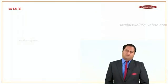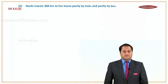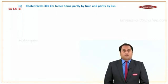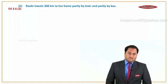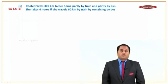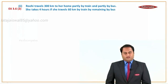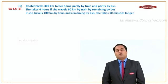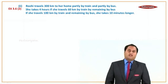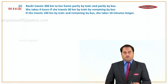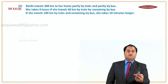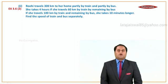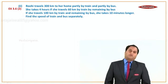Interesting sum on speed, distance and time. Exercise 3.6, sum number 2, sub question 2. Ruhi travels 300 kilometers to her home partly by train and partly by bus. She takes 4 hours if she travels 60 kilometers by train and the remaining by bus. If she travels 100 kilometers by train and the remaining by bus, she takes 10 minutes more. So first condition: 4 hours; second condition: 4 hours and 10 minutes. The question is find the speed of the train and bus separately.